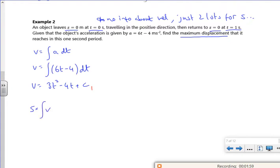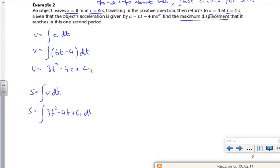Right, so that would be the integral of my velocity dt. So it's the integral of (3t² - 4t + c1) dt. I don't like doing this c1. So s will be t³ - 2t² + c1t + c2.